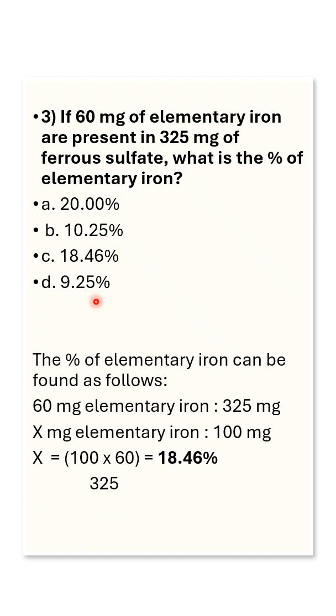In this question, the percentage of elemental iron can be found as follows. We are given that 60 mg of elemental iron is present in 325 mg of ferrous sulfate.